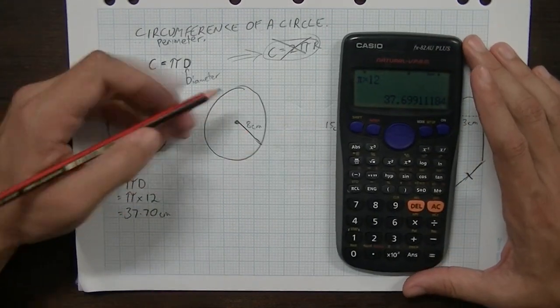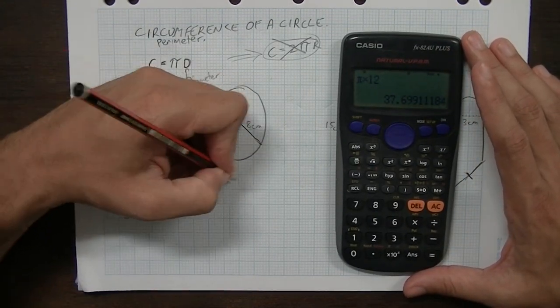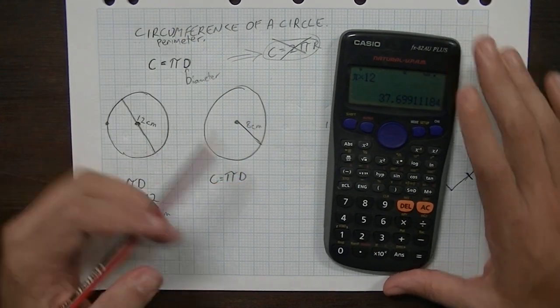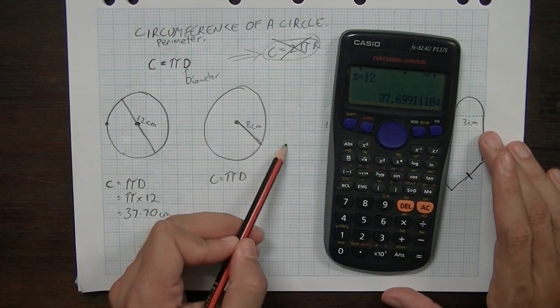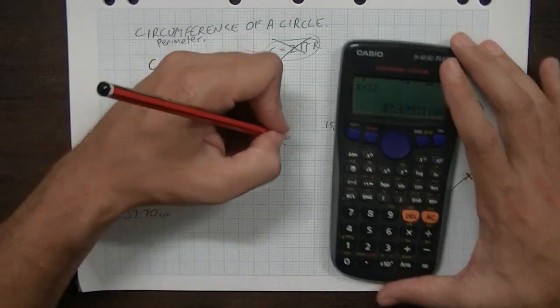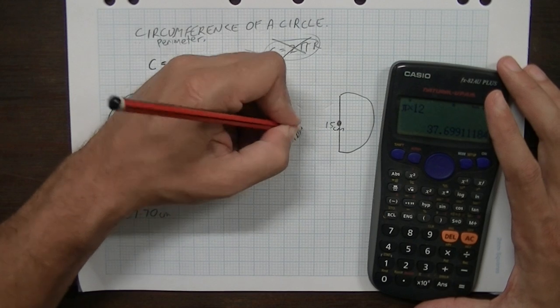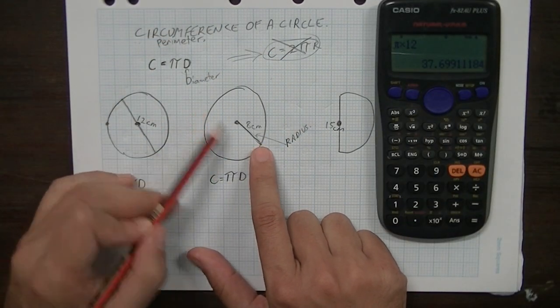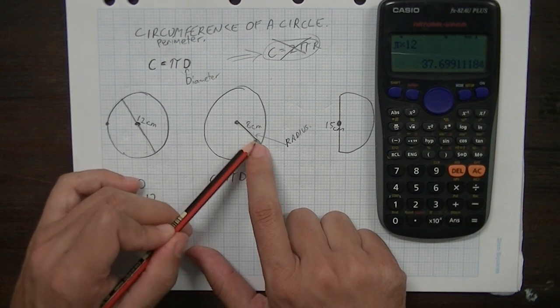Okay, let's move on to this one. Now, the same rule applies here. Circumference equals pi diameter, but they haven't given us the diameter. They've actually given us half of the diameter, which is called the radius. Really simple, though. If you want to know the diameter and you're only given the radius, you just need to double it.